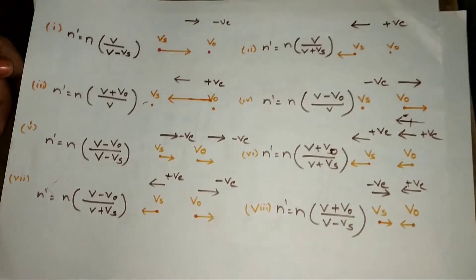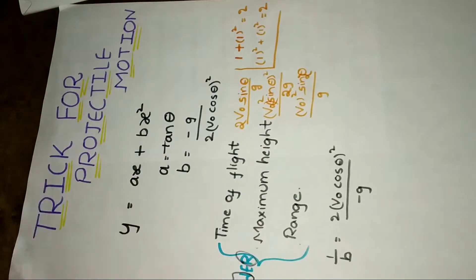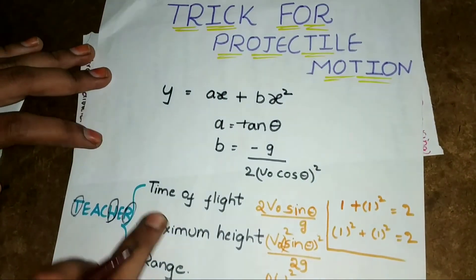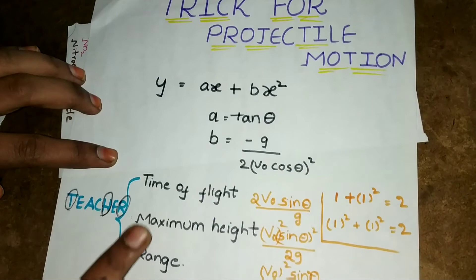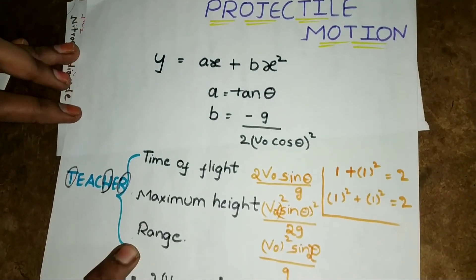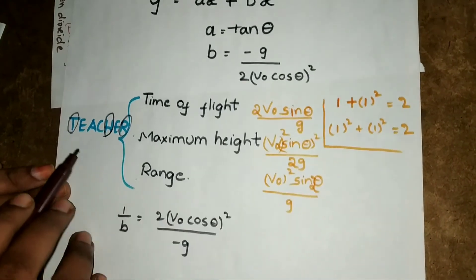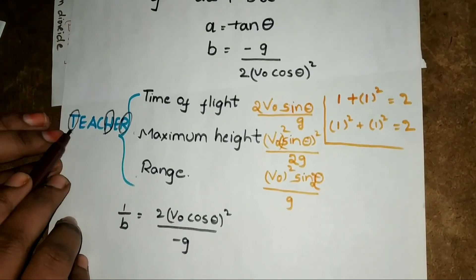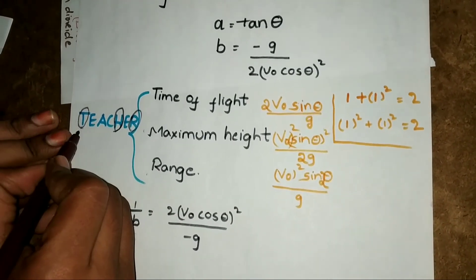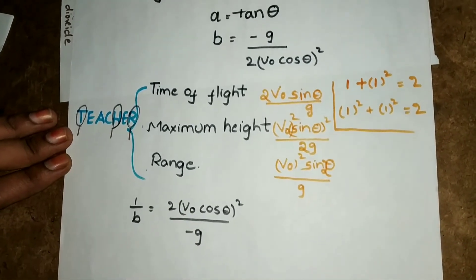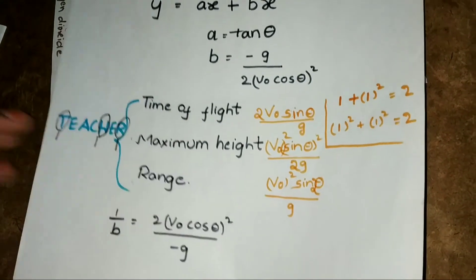I hope you enjoyed it. One thing from my previous video on the trick for projectile motion: remember the word TEACHER — T stands for time of flight, H for maximum height, R for range. If you are confused about the sequence, just remember that word.